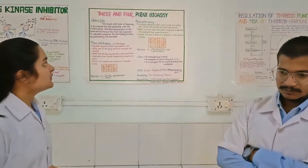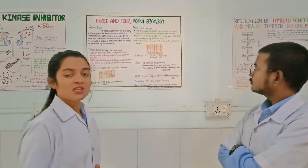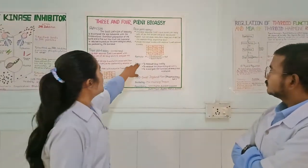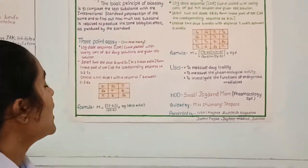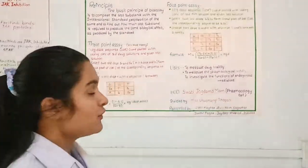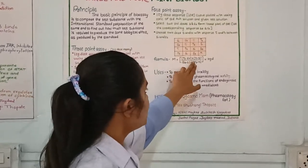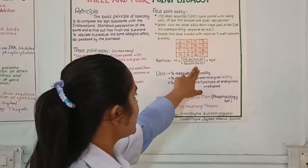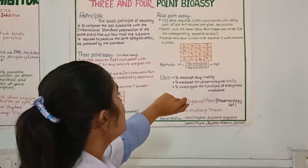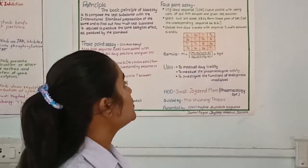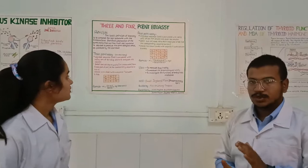We choose two test doses T1 and T2 with responses T1 and T2 falling between S1 and S2. Here is the table for the 4-point assay. The formula for the 4-point assay is: M = (T2 minus S2 + T1 minus S1) / (S2 minus S1 + T2 minus T1) multiplied by log D.